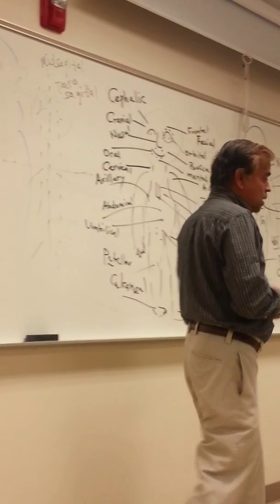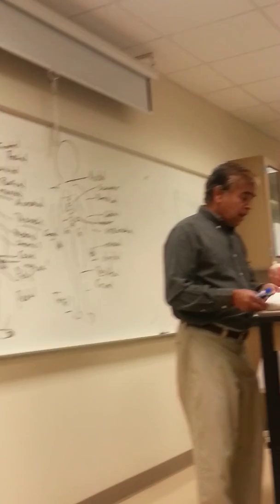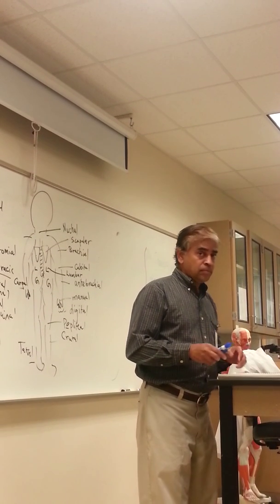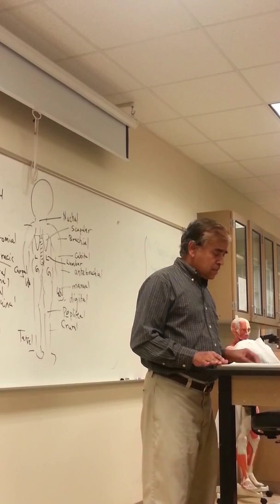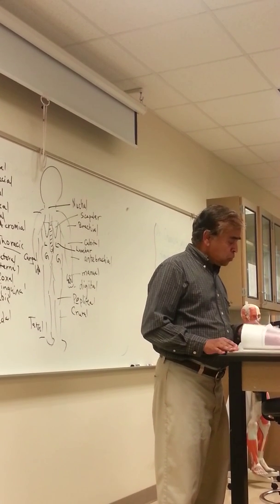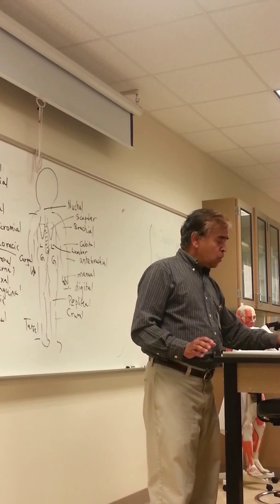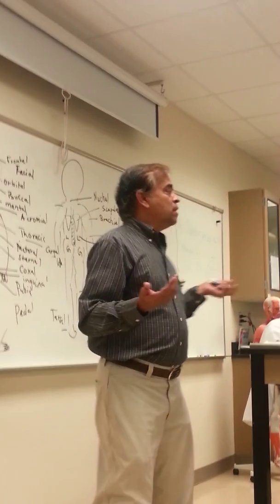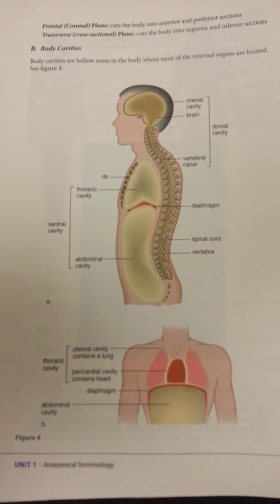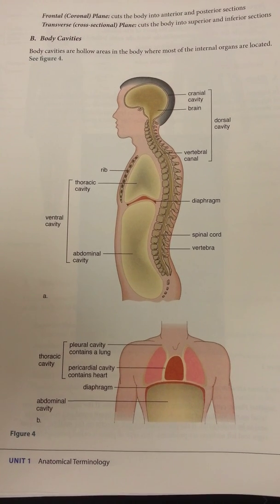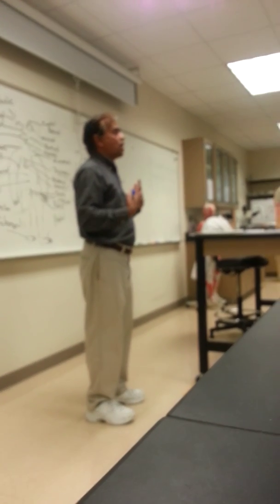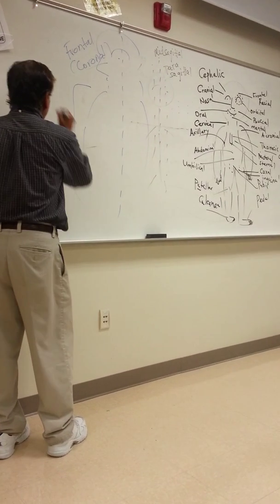That's the summary for body planes. Now the last section — let's do body cavities on page four. What do we mean by a cavity? An empty space. Like the ribcage — technically you have a physical space, but there are also imaginary spaces surrounding different organs. In the front of the body, we call this the ventral cavity.